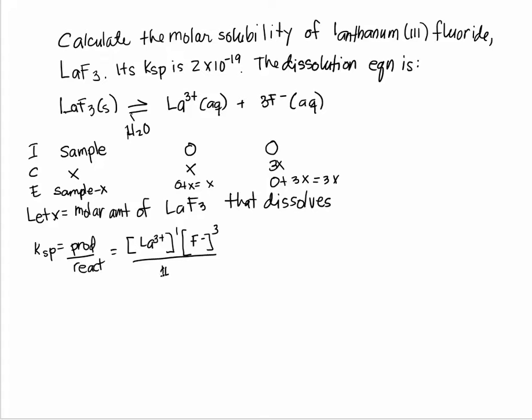Let's plug in the values. Ksp is two times ten to the negative nineteen. Concentration of La³⁺ at equilibrium, according to our ICE table, is X. Concentration of F⁻ at equilibrium is three X, and we have to raise it to the third power.